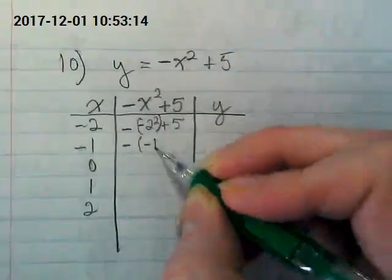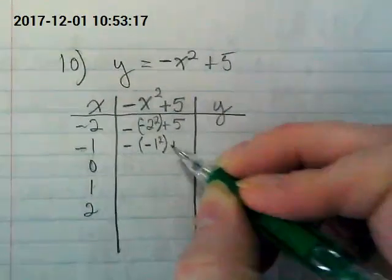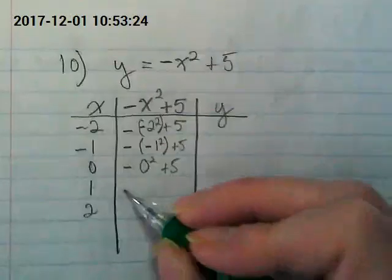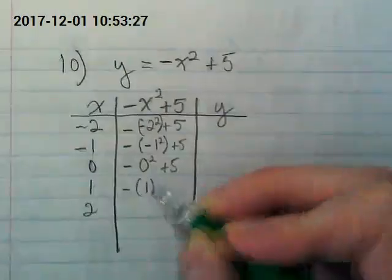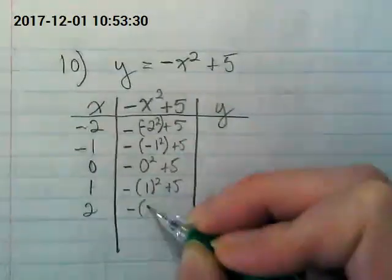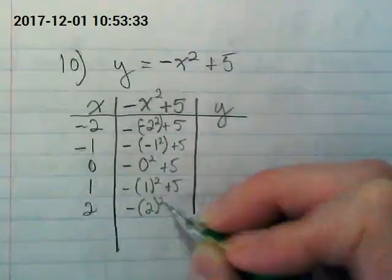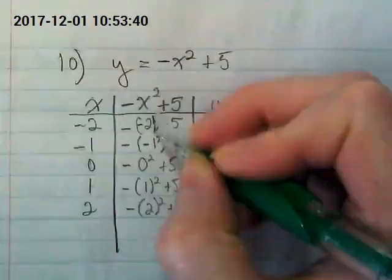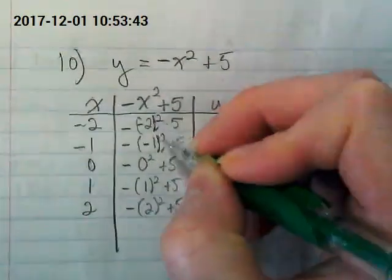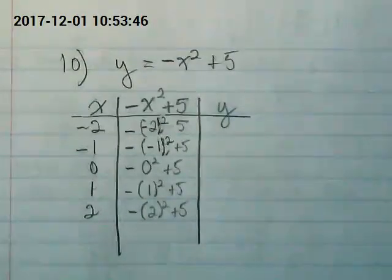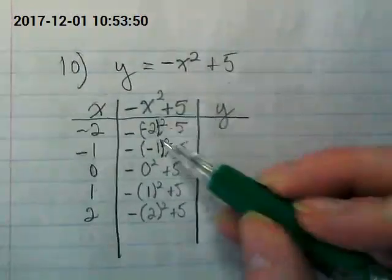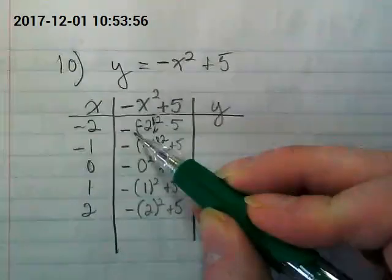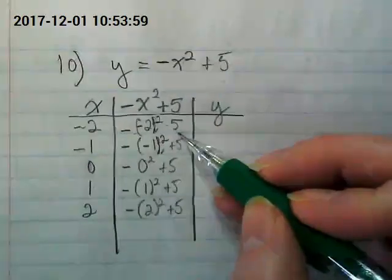I'm really glad we chose this example after our last conversation because, yeah, we have to put the parentheses in here, don't we? Except for the zero, it kind of doesn't matter. The first thing we have to do is square our x value and then multiply it by a negative. So negative two squared is going to be positive four times negative one makes it a negative four plus five, one.